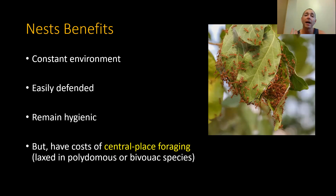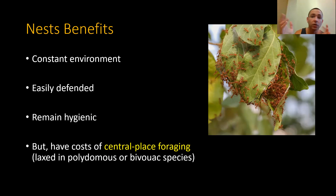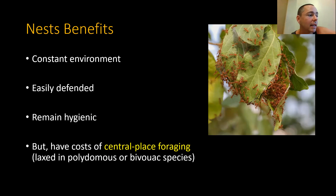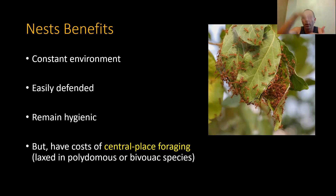Nests are beneficial — they provide a constant microenvironment: certain temperature, certain humidity, certain light levels. They're more easily defended, usually with smaller openings. There are structures — biomaterials, silk, or living structures — that defend the most vulnerable components of the colony, like the queen and the brood. They can remain hygienic: you can groom the interior of the nest and make it much more hygienic and microbially controlled than the external environment.